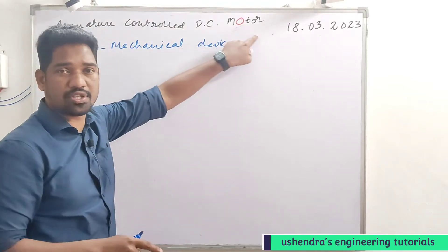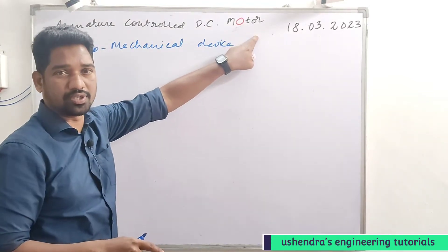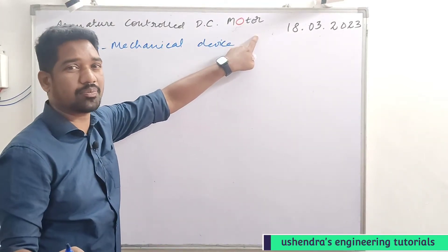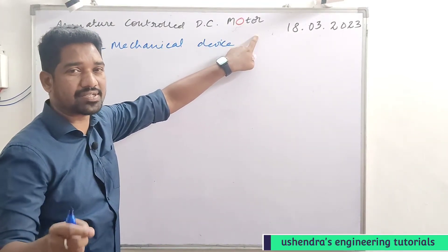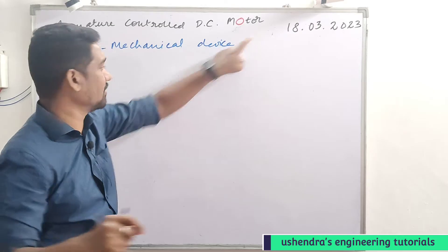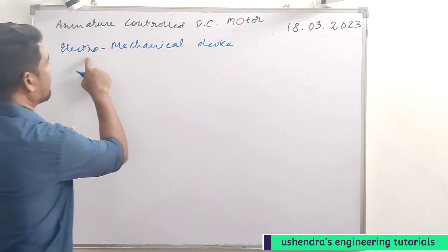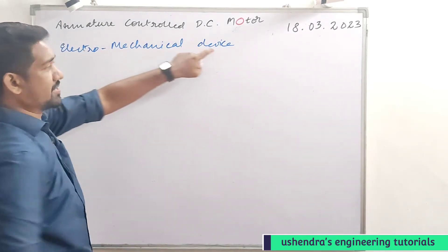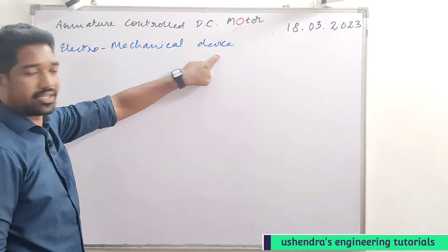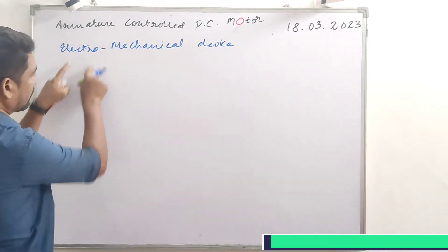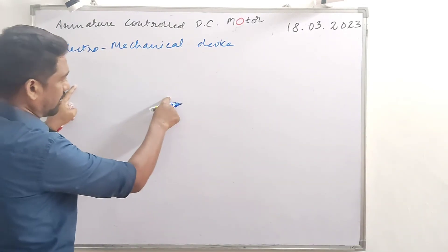Transfer function of an armature control DC motor. A DC motor is an electromechanical device. There is an electrical part and a mechanical part.